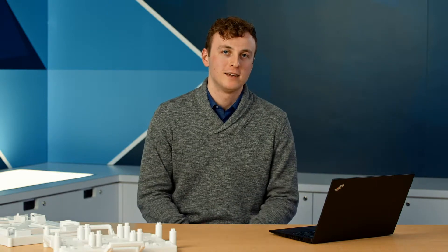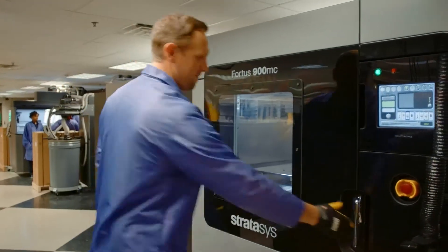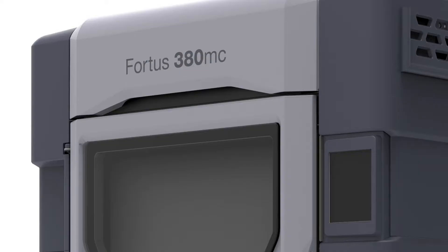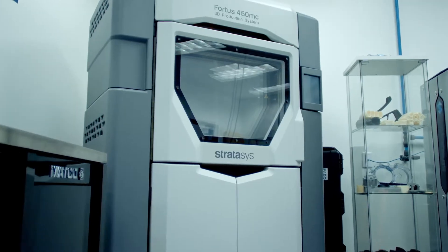Accuracy is a priority when it comes to inspection fixtures because inspection is all about accuracy. Stratasys FDM printers are known for their reliability and dimensional accuracy, especially the 380 and the 450.